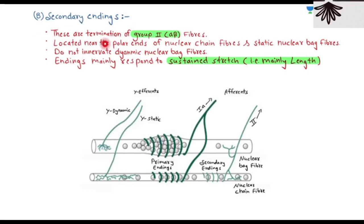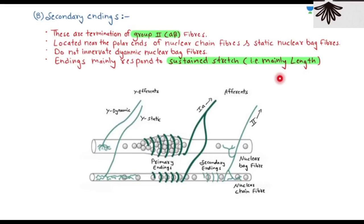The second type of sensory innervation is the secondary ending, which is the termination of Group II / Aβ fibers — so primary endings use Aα fibers and secondary endings use Aβ fibers. Secondary endings are located near the polar ends of nuclear chain fibers and static nuclear bag fibers. These two fibers — nuclear chain and static nuclear bag — respond according to length and sustained stretch.